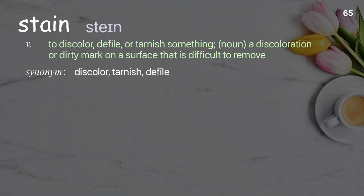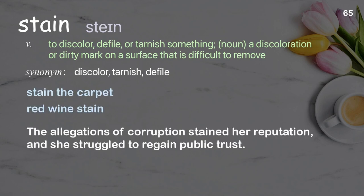Stain: To discolor, defile, or tarnish something. Noun: a discoloration or dirty mark on a surface that is difficult to remove. Examples: Stain the carpet. Red wine stain. The allegations of corruption stained her reputation, and she struggled to regain public trust.